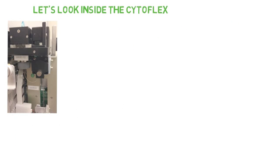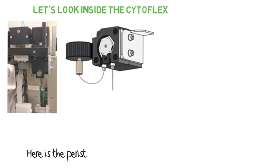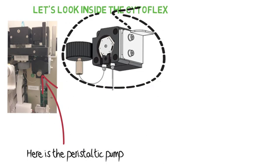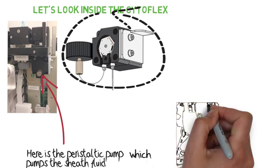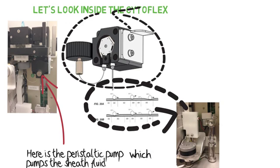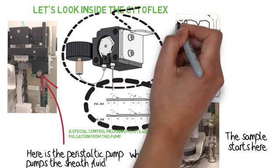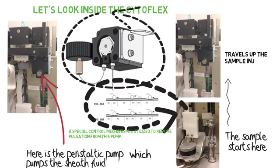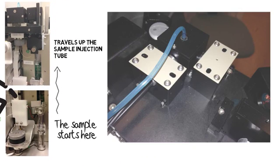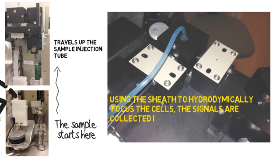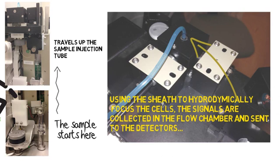Let's look inside the Cytoflex. Going through the fluidics, we see the peristaltic pump here in the center of the instrument. The sample is collected from the sampling station and transferred to the flow chamber. The Cytoflex peristaltic pump design removes pulsation through physical modification to the roller mechanism and computer feedback algorithms to control movement of the pump. This special design combined with computer control reduces pulsation and increases precision. The flow chamber uses hydrodynamic flow to create a single particle stream which passes by each laser line and out to the waste station.